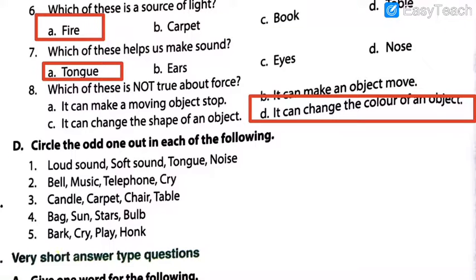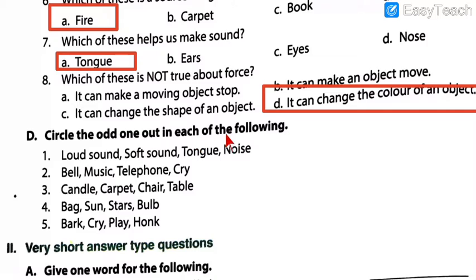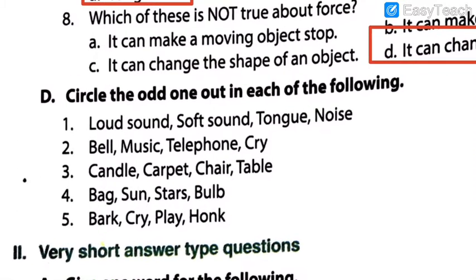Now let us move to question D: circle the odd one out in each of the following. Here a list of objects is given, and you have to highlight the word that does not match in the list - the majority wins and the minority one gets circled. List number one: loud sound, soft sound, tongue, and noise. The odd one is tongue, because loud sound, soft sound, and noise are all related to types of sound, while tongue does not match the category.